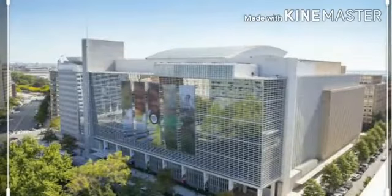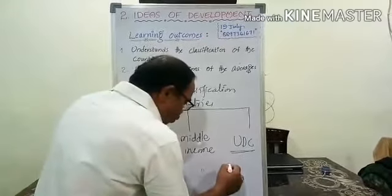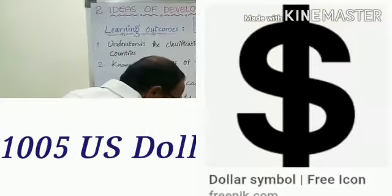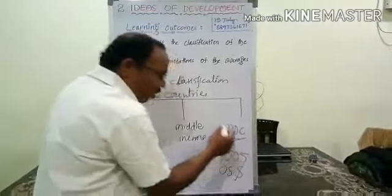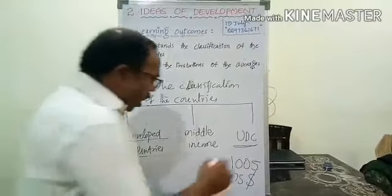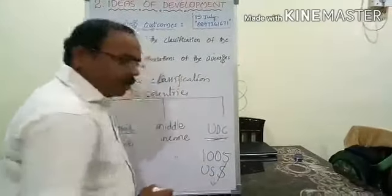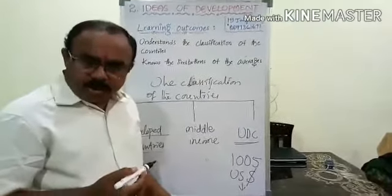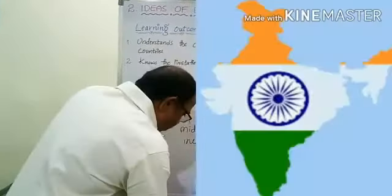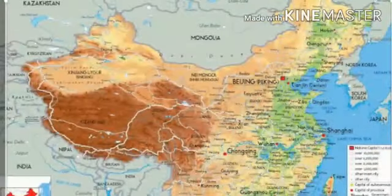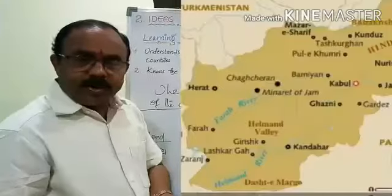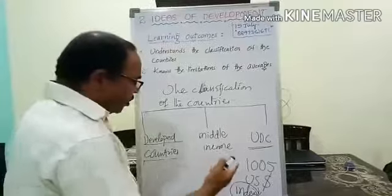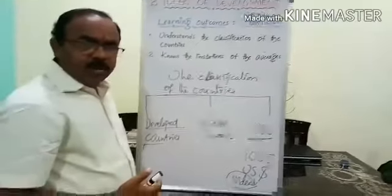According to the World Bank report, underdeveloped countries are those whose per capita income is less than 1,005 US dollars per annum. Examples of underdeveloped countries include India, China, Pakistan, and Afghanistan, because the per capita income of these countries is less than 1,005 US dollars.